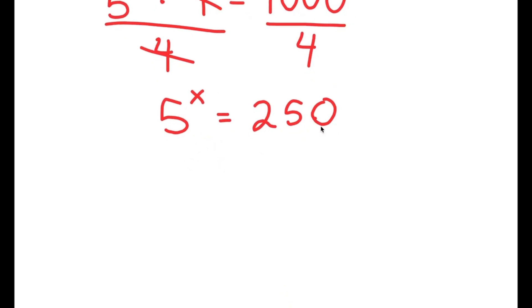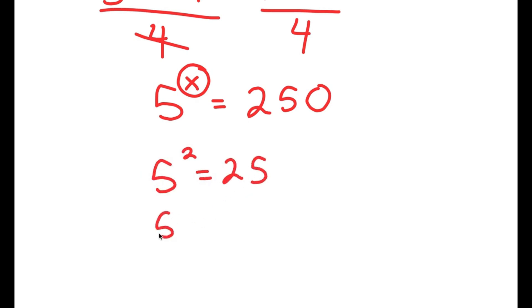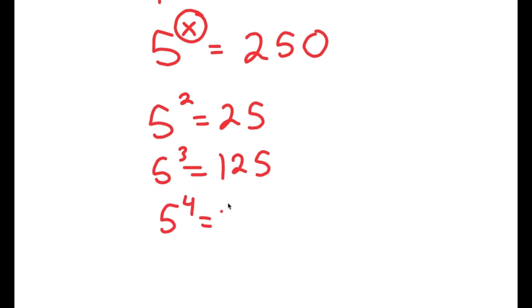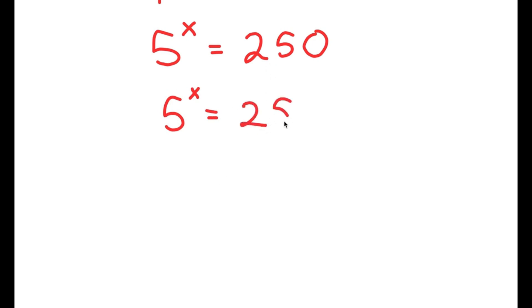We have 5 to the power of x is equal to 250, and just at first glance of this equation, we can tell that x is not going to be a whole number, because 5 squared is 25, 5 to the power of 3 is 125, and 5 to the power of 4 is 625. So the value of x is somewhere in between 3 and 4. Now, to actually find the exact value of x, not just an estimate, we're going to rewrite 250 as 25 times 10.